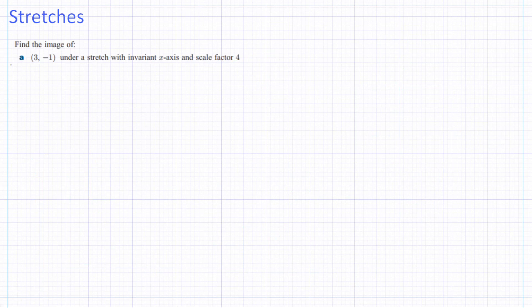A couple closing examples. Find the image of this point (3, -1) under a stretch with invariant x-axis and scale factor 4. It's really simple. We'll have this point undergoing this transformation, which will be 3 and k times negative 1. We know the value, so we can just put it in. K is 4, so 4 times negative 1, that's going to be negative 4. That's done.